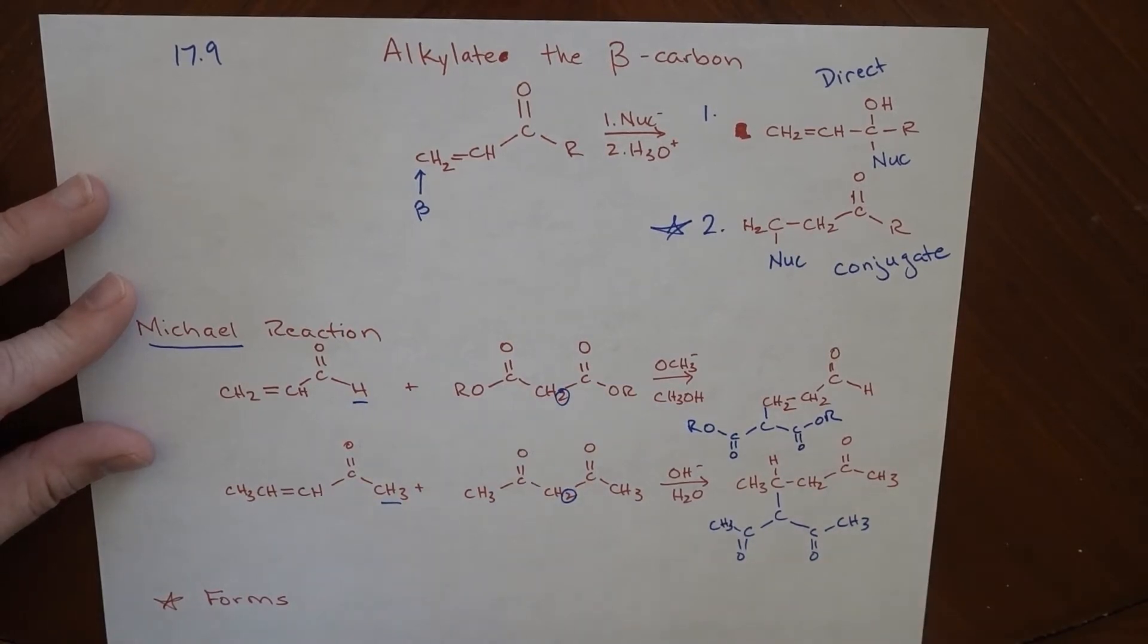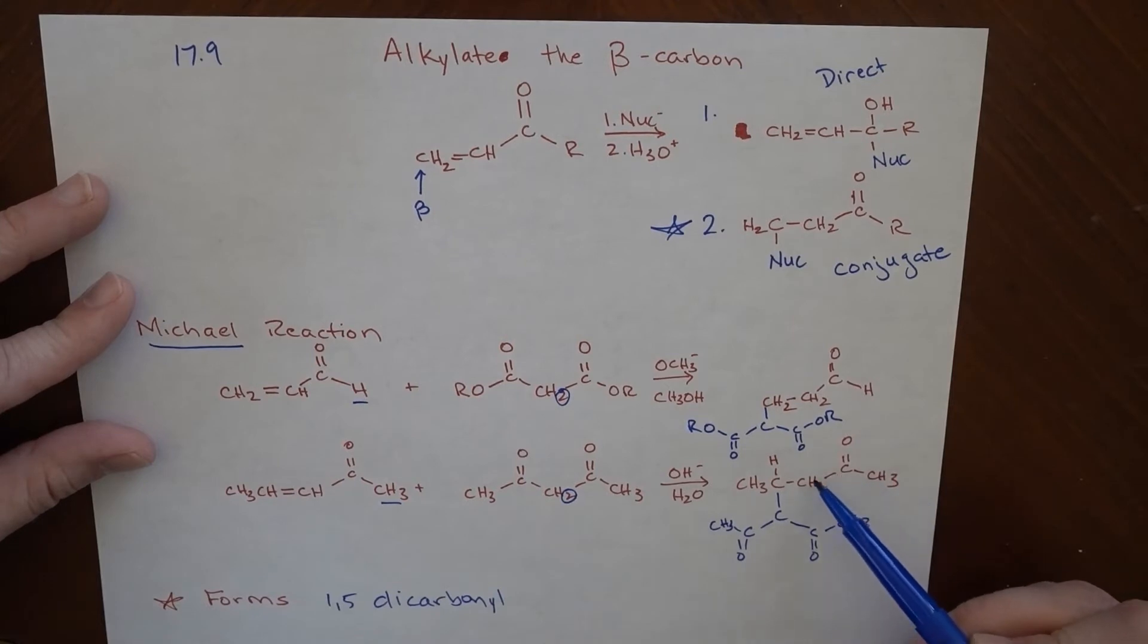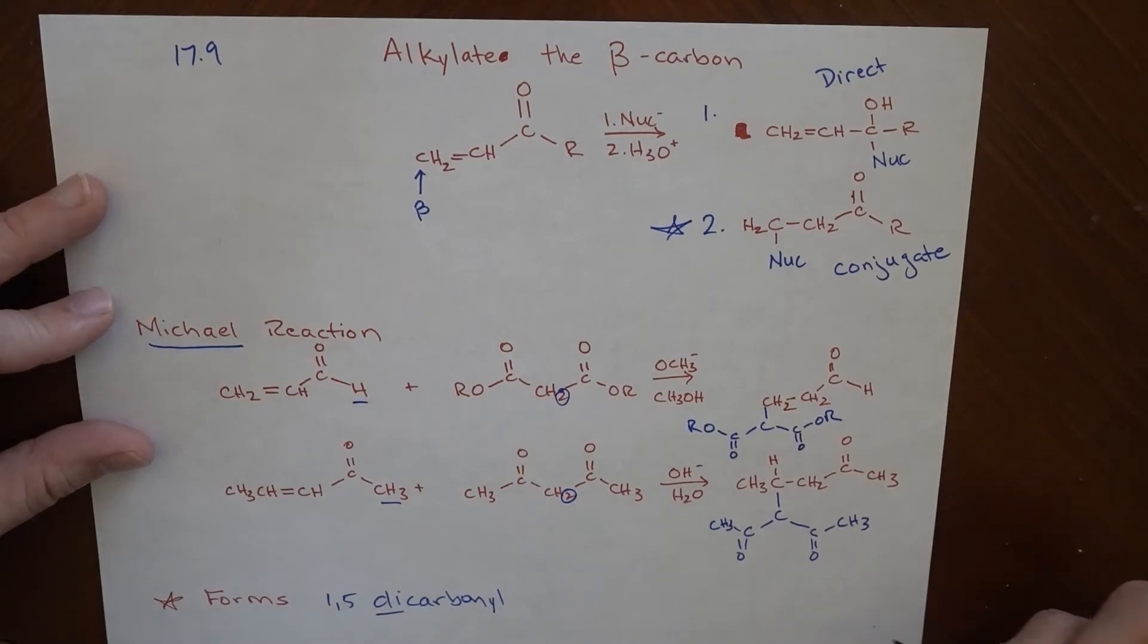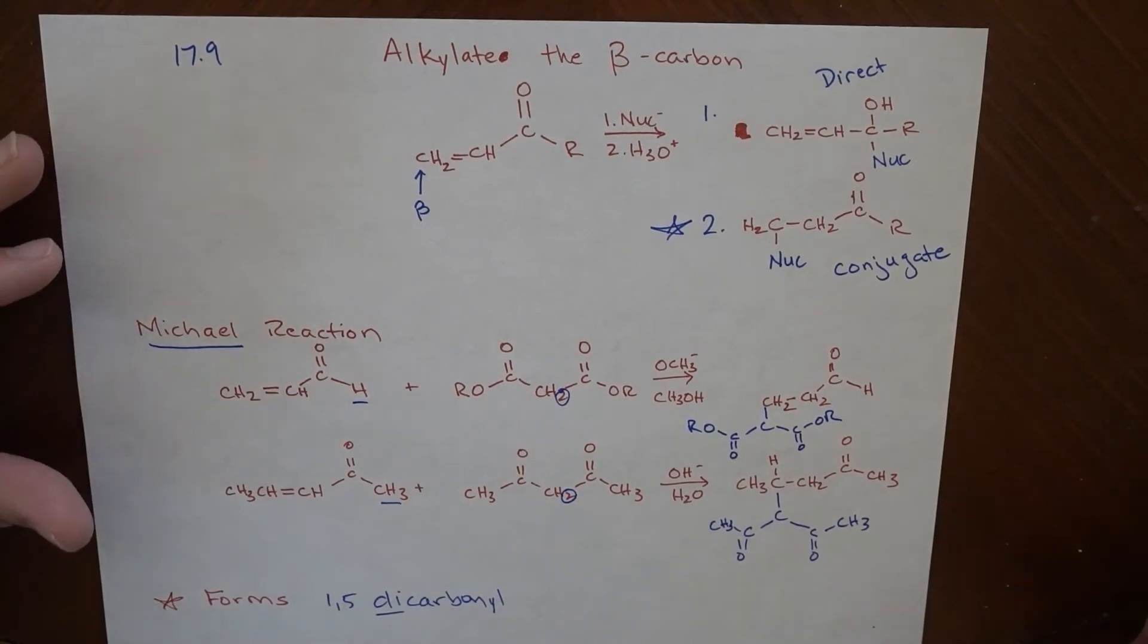And so the thing that this forms is what's known as a 1,5-dicarbonyl. And a 1,5-dicarbonyl is named that way because there are one, two, three, four, five carbons separating these two carbonyls. So that is the basic part of the Michael reaction. In another video, I'll show you the mechanism for it and a sample.